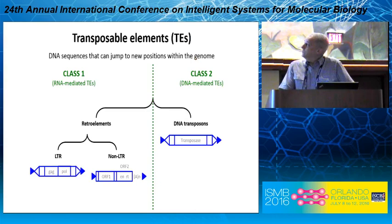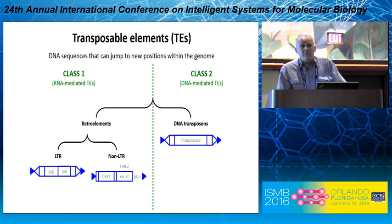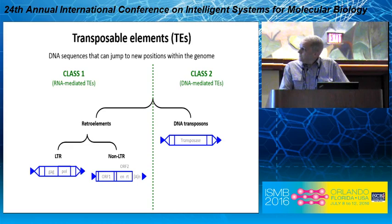A quick intro to transposable elements and L1s. They're basically DNA sequences that can jump around genomes, and they are classified into two classes. Class 1s are RNA-mediated, class 2s are DNA-mediated. DNA transposons are the ones that Barbara McClintock essentially discovered, and they copy themselves around the genome using a DNA intermediate. Retro elements, on the other hand, in class 1 use an RNA intermediate.